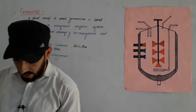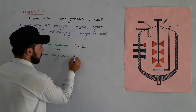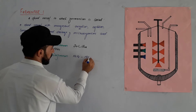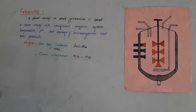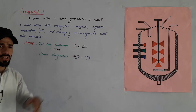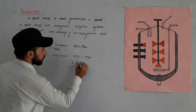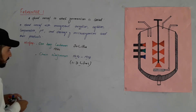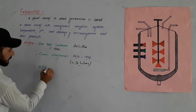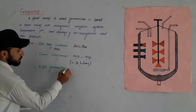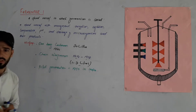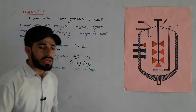Fermenters grew in size over time. Earlier fermenters had a capacity of about 1 to 2 liters. Then came pilot fermenters around 1950. A pilot fermenter had a larger size, and gradually fermenters grew to hold up to one million liters, used for large-scale industrial production.